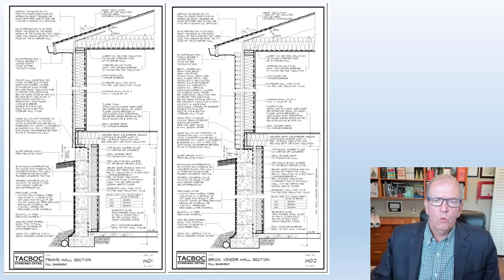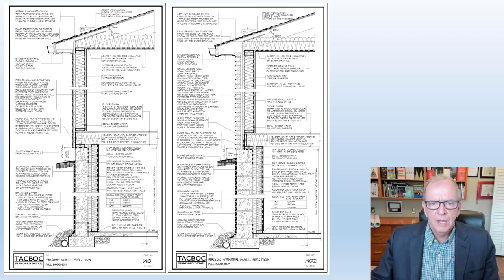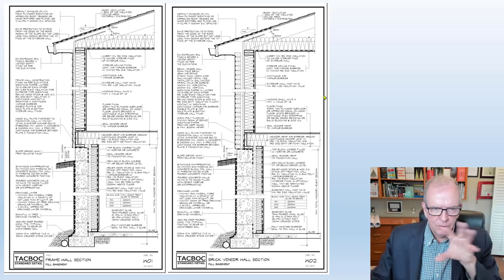These wall section details are actually done by the Toronto Area Chief Building Officials Committee. They're based on National Building Code of Canada and Ontario Building Code standards, but they're pretty typical for North American housing — it doesn't really matter US or Canada. There will be some minor code differences by geographical area, but how it's structured and how you read and interpret the information is very similar. I've got these two wall sections and I'm going to zoom in on them.